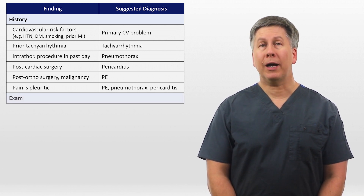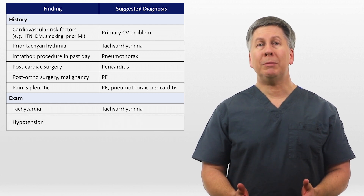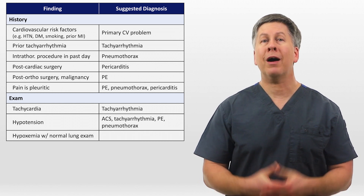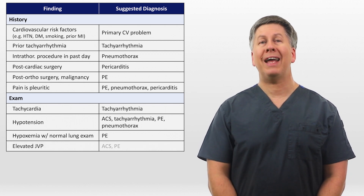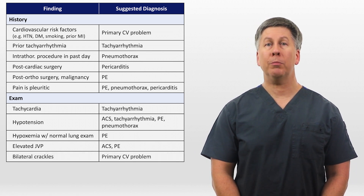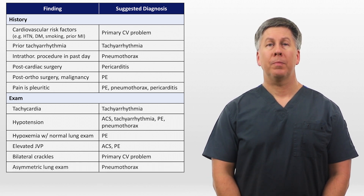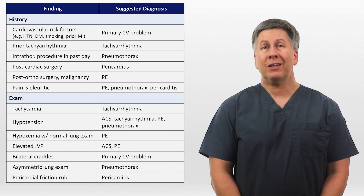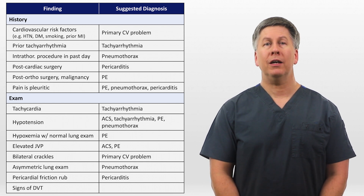Regarding the highly focused exam: tachycardia points to a tachyarrhythmia as the primary cause. Hypotension can be seen in acute coronary syndrome, arrhythmias, PE, or pneumothorax. Hypoxemia combined with a normal lung exam strongly suggests a PE. Elevated JVP points towards either ACS or PE. Bilateral crackles suggest a primary cardiovascular problem rather than a lung process, while an asymmetric lung exam suggests a pneumothorax. A pericardial friction rub points towards pericarditis, but it is uncommon and often fleeting. Signs of a deep vein thrombosis in the leg suggest PE.